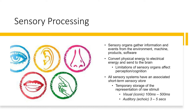Sensory organs gather information about the environment, machines, products, and any software we're interacting with, and they convert this physical energy to electrical signals and send it to the brain. The limitations of our sensory organs can affect our ability to perceive stimuli — for instance, if you have hearing loss or vision impairment, you might not be able to detect a stimulus. All sensory systems have an associated short-term memory, which is temporary storage of the representation of raw stimuli prior to processing. Our visual or iconic memory is very short, only 100 to 500 milliseconds.